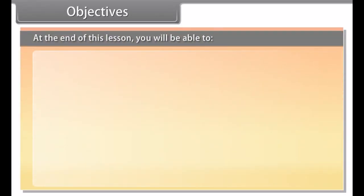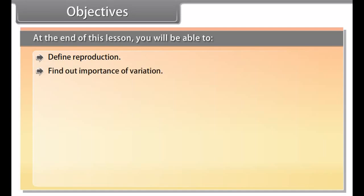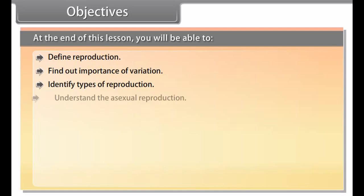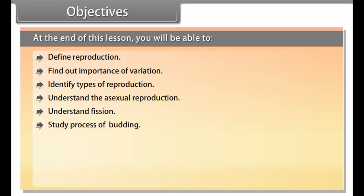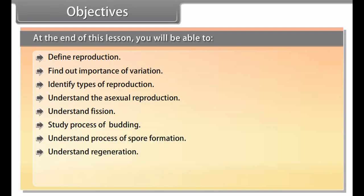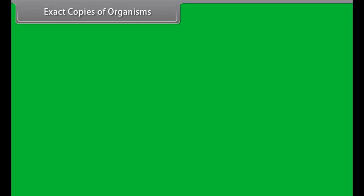At the end of this lesson, you'll be able to: define reproduction, find out importance of variation, identify types of reproduction, understand asexual reproduction, understand fission, study the process of budding, understand spore formation, understand regeneration, understand fragmentation, find out vegetative reproduction, and understand exact copies of organisms.